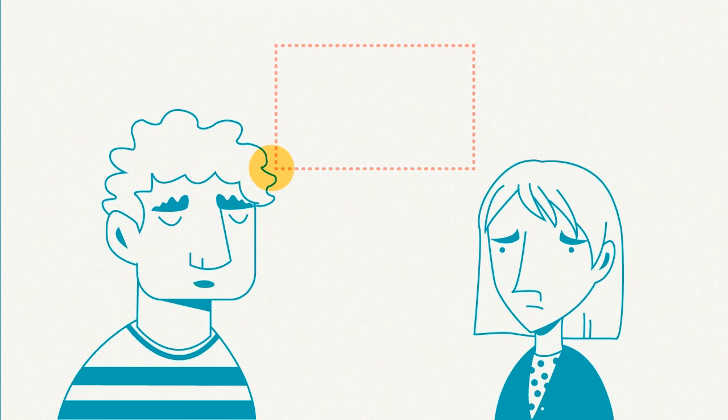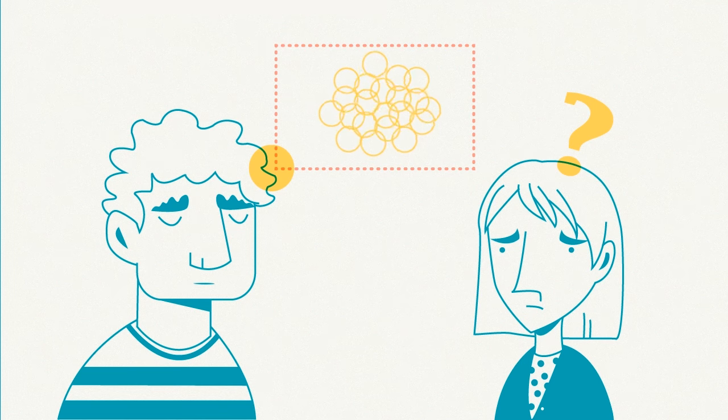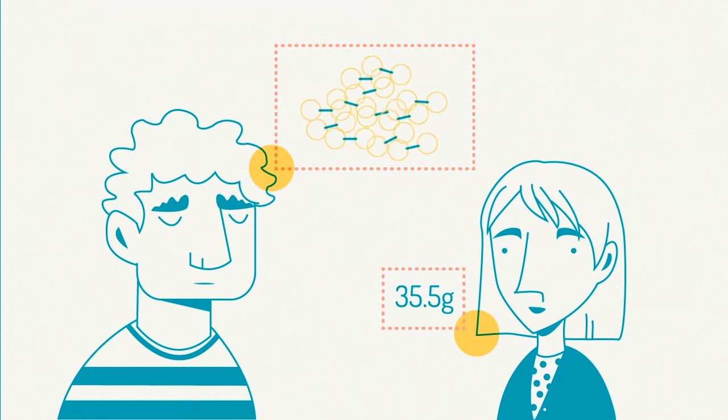If someone asks you, what is the mass of Avogadro's number of chlorine particles, it is impossible to answer the question without the person going into more detail. If by chlorine particles they mean chlorine atoms, the answer is 35.5 grams. If, however, by chlorine particles they mean chlorine molecules, the answer is 71 grams.